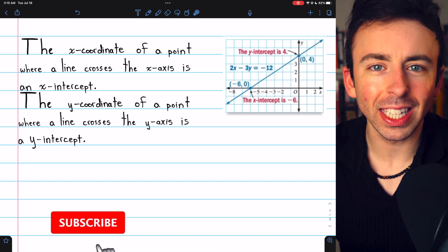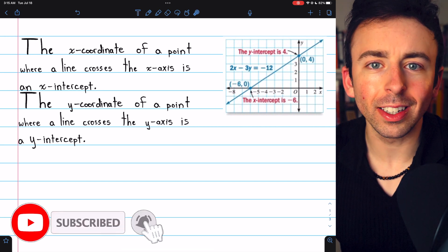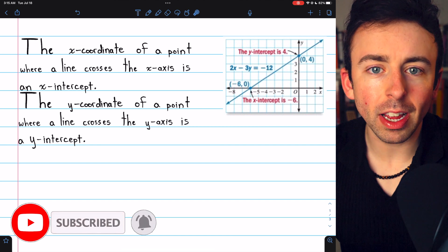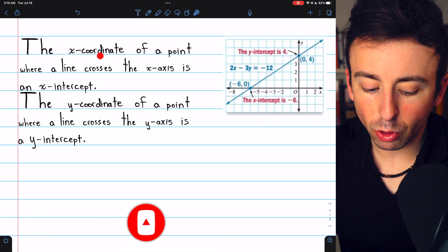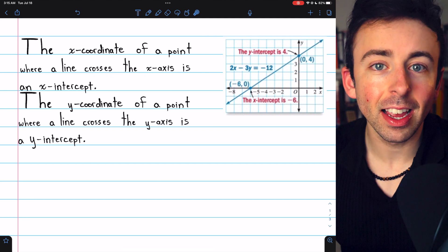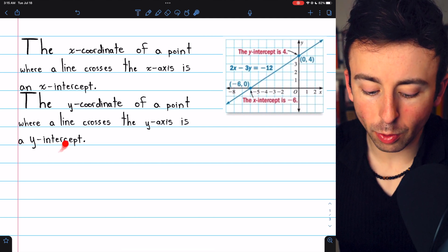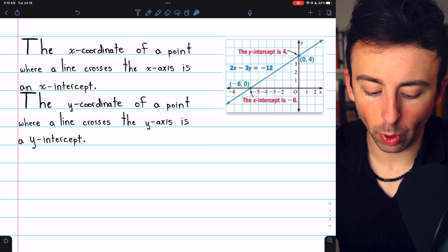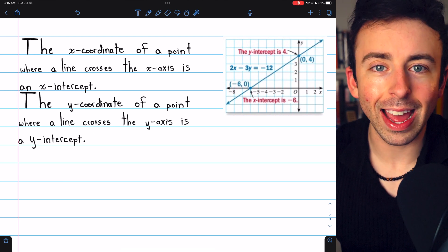The x and y-intercepts of a line are exactly what you would expect. The x-intercept of a line is the x-coordinate where the line crosses the x-axis. Similarly, the y-intercept of a line is the y-coordinate of a point where the line crosses the y-axis.